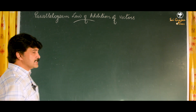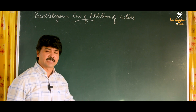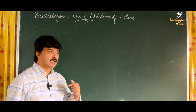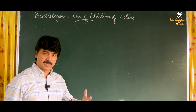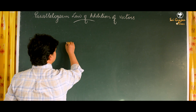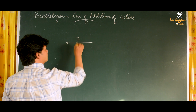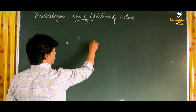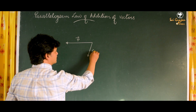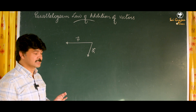This law is much easier to understand than the triangle law and is easy to apply as well. Let's say we have to add a vector P in one direction and Q in another direction — P and Q are the two vectors which have to be added to get the resultant.